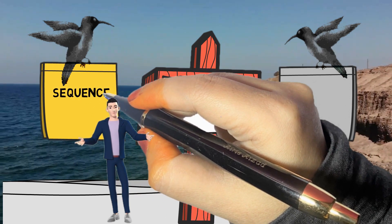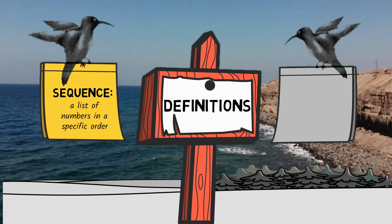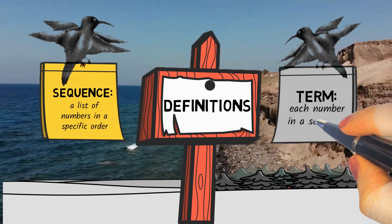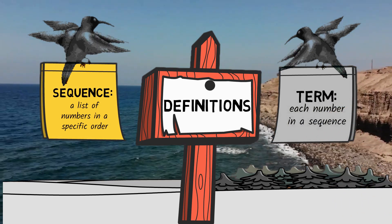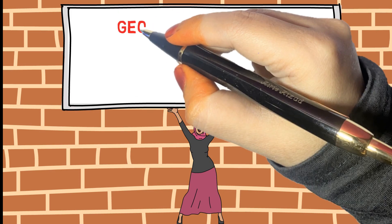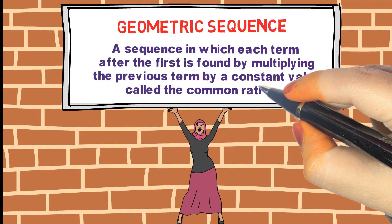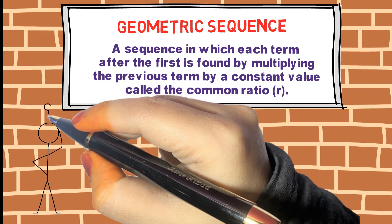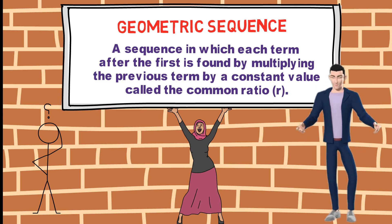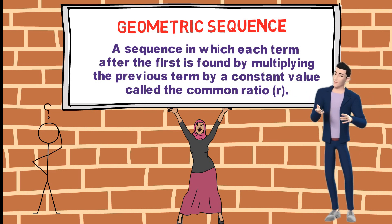A sequence is an ordered list of items, usually numbers. Each item which makes up a sequence is called a term. A geometric sequence is a sequence in which each term after the first is found by multiplying the previous term by a constant value called the common ratio.